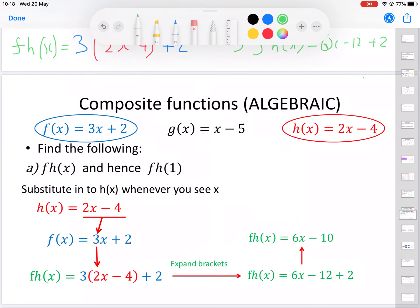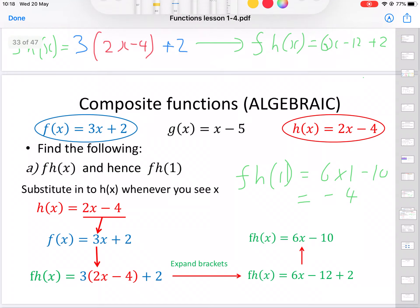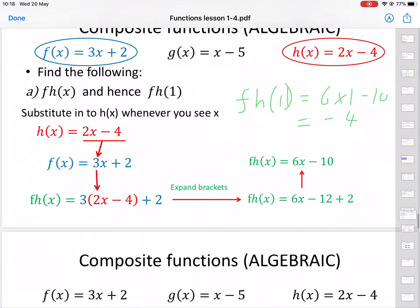And now if we do the second part, fh(1), that's just going to be 6 times 1 minus 10. So 6 times 1 is 6, minus 10 is minus 4. So we can see it is getting tricky here, and these are all the trickiest steps.